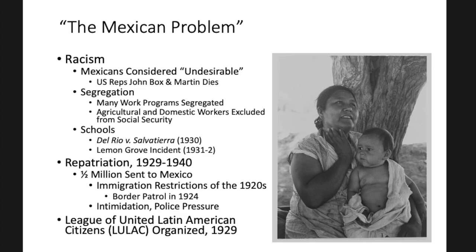In 1929, the repatriation program began and continued throughout the Depression. Overall, some half million Mexican nationals — and many Mexican Americans as well — were included in the deportations and were sent to Mexico. This built upon the immigration restrictions of the 1920s, many of them supported by John Box; for example, the Border Patrol was created in 1924. During the repatriation program, there were also reports of intimidation and police pressure on citizens, urging them to return to Mexico.